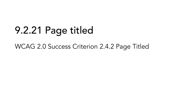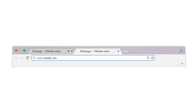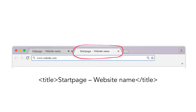9.2.21 Page Titled is based on WCAG 2.0 Success Criterion 2.4.2 Page Titled. To pass this criterion, the web pages must have titles that describe the content or purpose, for example the main heading of the page followed by the website name. In HTML, you do this by using the element title. The title element helps the user to identify their location and also to keep track of what web pages are active in the browser, since the titles can be found on the tabs in the browser window. The title is often used also by search engines when displaying the search results.